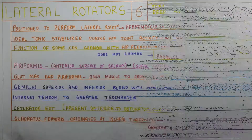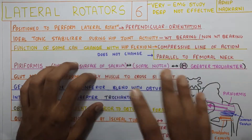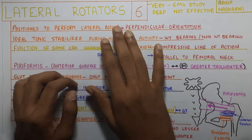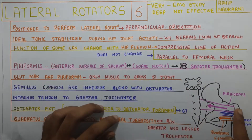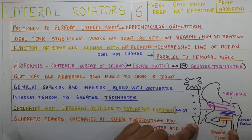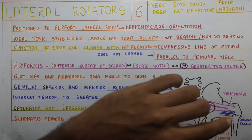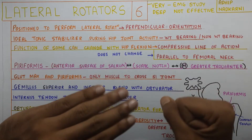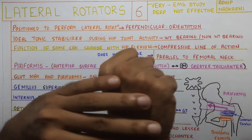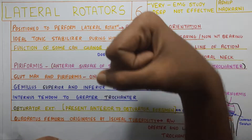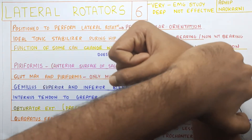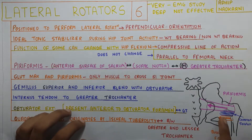Starting with the lateral rotators in general, there are six of them. They are positioned to perform lateral rotation. Looking at the diagram, this is your pelvis and this is your femur. All these muscles are perpendicularly arranged to your femur, so when they contract they laterally rotate your femur. They are attached from the posterior aspect, so when they contract, they laterally rotate your femur.